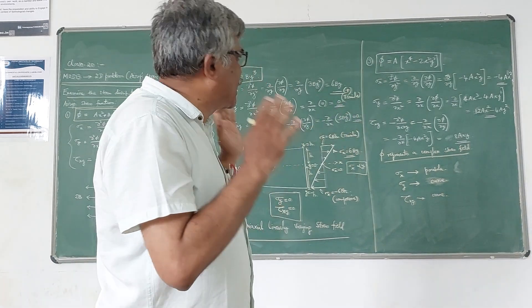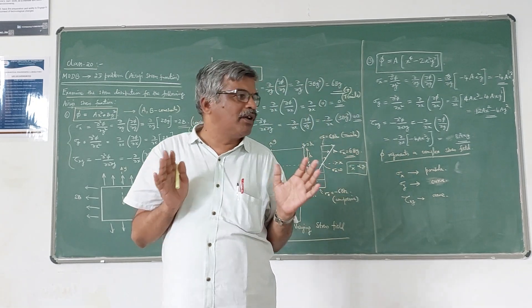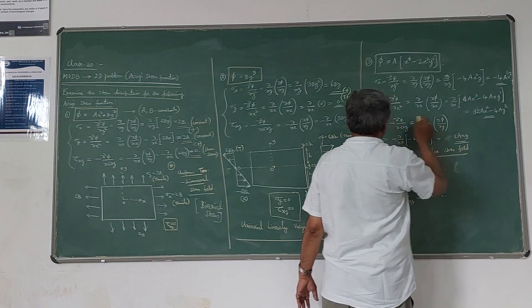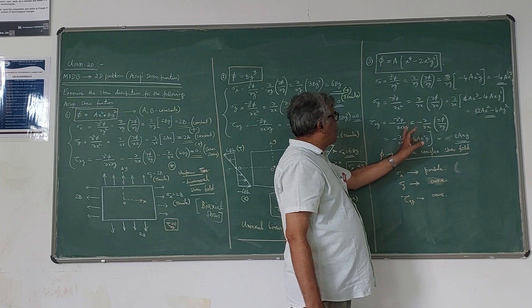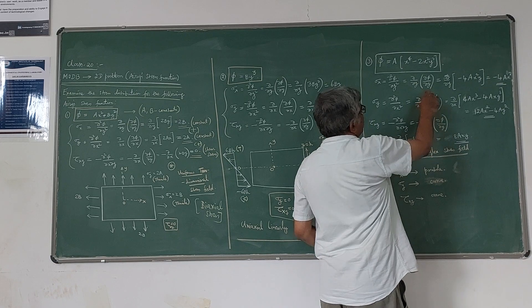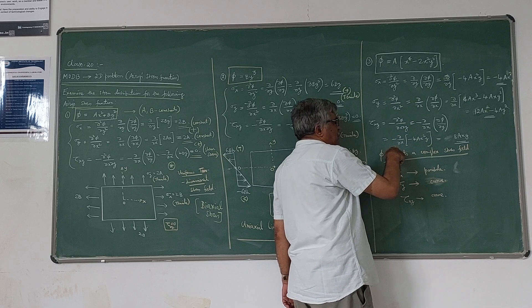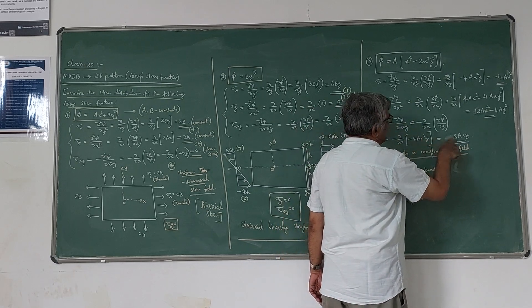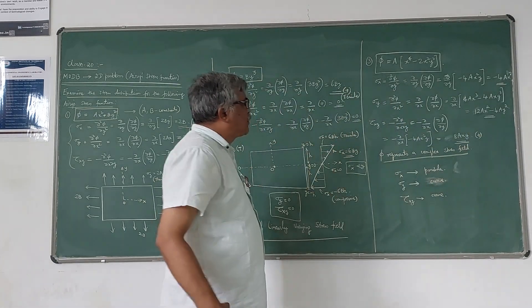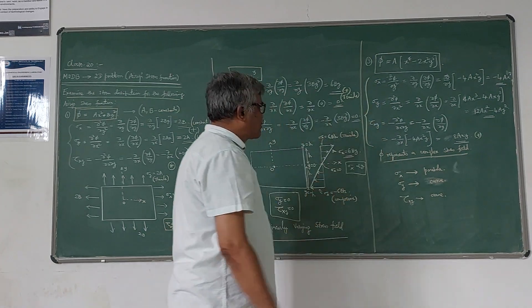When differentiating, treat y as constant when differentiating with respect to x, and treat x as constant when differentiating with respect to y. This gives σy = 12ax² − 4ay². Similarly, τxy = −∂²φ/∂x∂y = −∂/∂x of ∂φ/∂y. We already have ∂φ/∂y = −4ax²y. Differentiating with respect to x gives τxy = 8axy, which is positive.